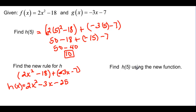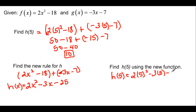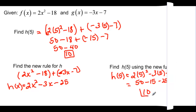Now it says find h of 5 using the new function. So h of 5 is going to be 2 times 5 squared minus 3 times 5 minus 25. This is 50 minus 15 minus 25, and we get the same answer of 10.